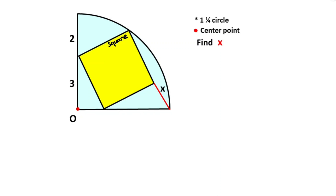Hello everyone. This will be a how-to: a quarter circle whose corners lie on a square. This side is given two units and here is given three units. O is the center of the quarter circle.